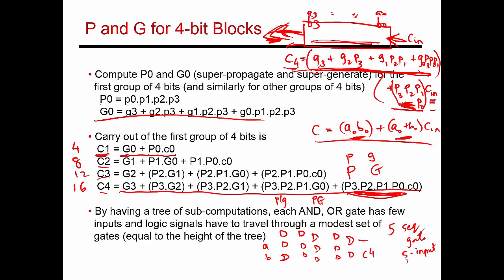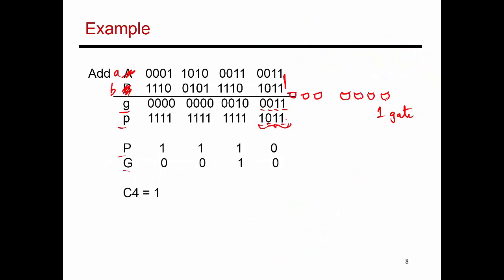So P0 is this term here, G0 is this term over here. So I wish I had reproduced those equations here, but essentially P0 is small P0, P1, P2, and P3, this is the AND of those four values. So if I AND these four values, I get the result 0.